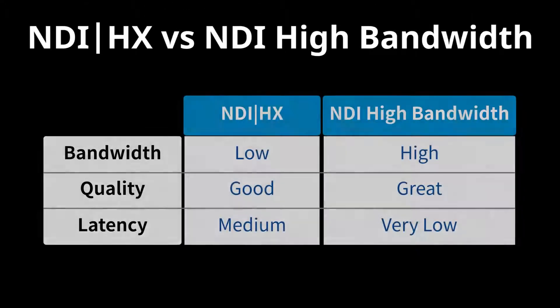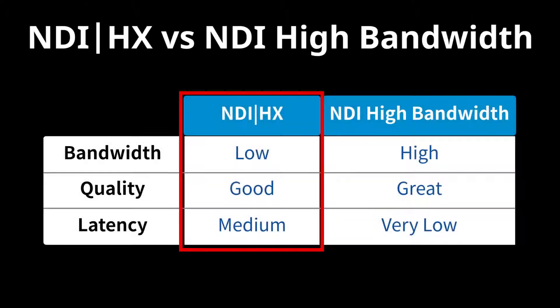High-efficiency runs at greatly reduced bit rates and works on networks where bandwidth may be limited. NDI-HX is the best option for most users, delivering high-quality video, minimal latency and low-bandwidth consumption.